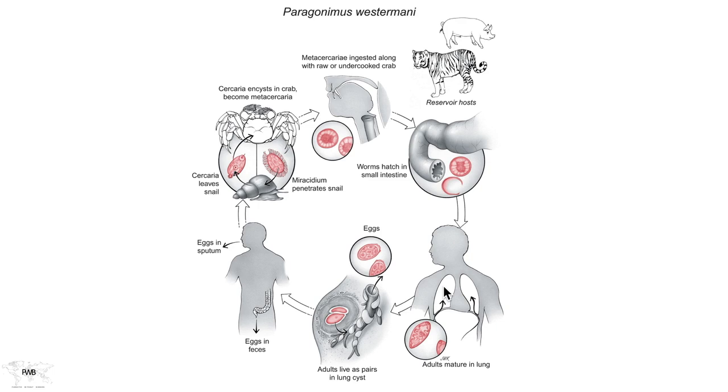Once the adult is present in the lung, it begins to feed on lung tissue and create for itself an abscess. Paragonimus has the capacity for self-fertilization, but typically they're found in pairs. Each adult worm reverses itself on the other, and sperm passes from one organism to the other, resulting in cross-fertilization rather than self-fertilization, which is the rule.